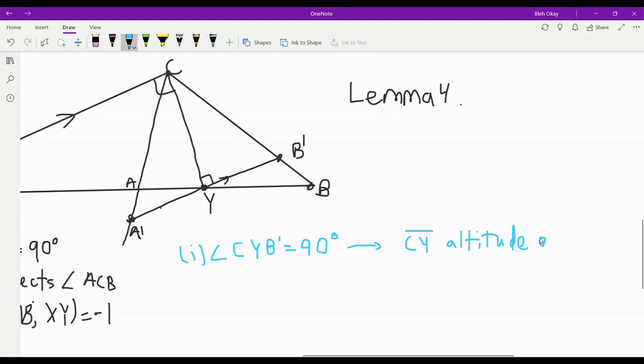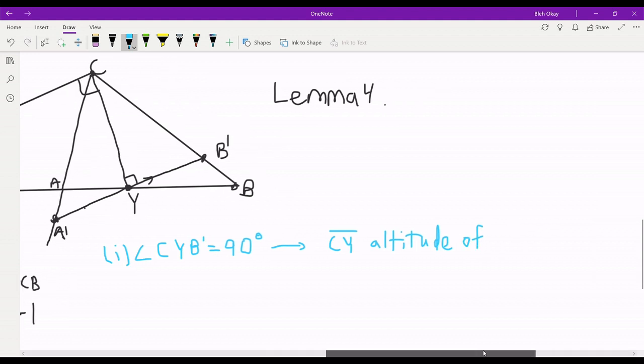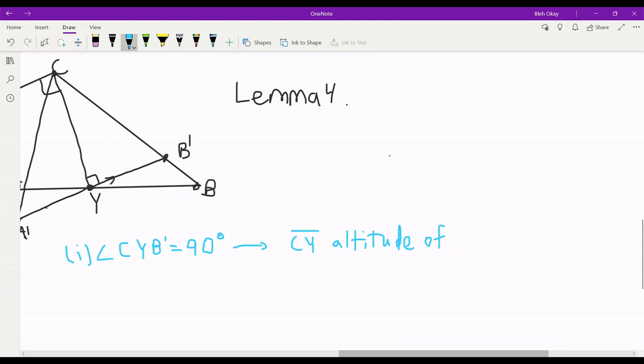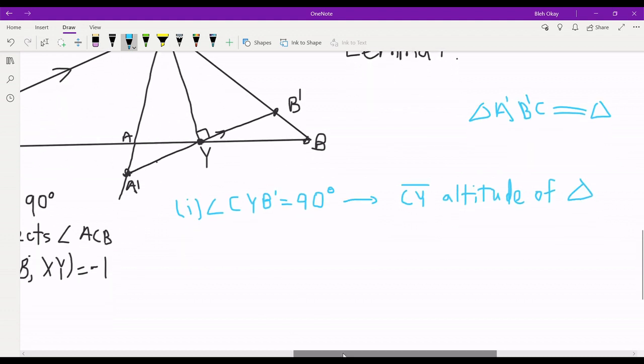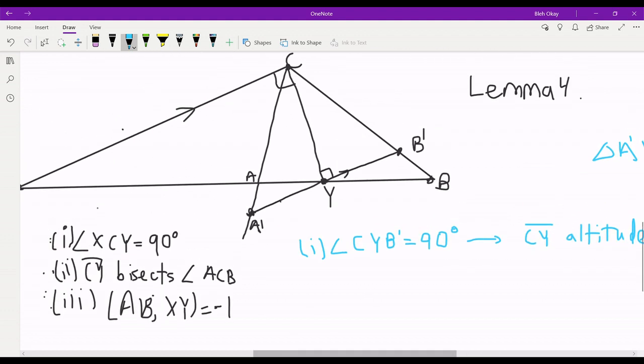Another way we could phrase that, we're going to use this triangle a lot, so I'm just going to abbreviate it by a triangle sign. So CY is an altitude of the triangle. That's how we rewrite the first condition.